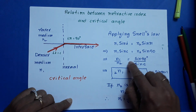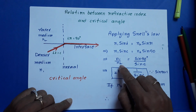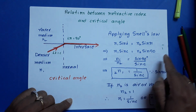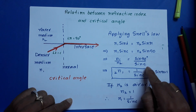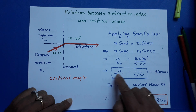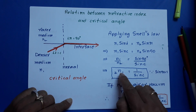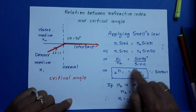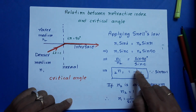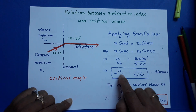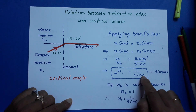Bring N2 to the LHS side. So N1 by N2 — send sin c to the RHS side — is equal to sin 90 by sin c. N1 by N2 means N12. How can you read it? Refractive index of the first medium relative to second medium. Sin 90 is nothing but 1, so it is 1 by sin c. This is the relation between refractive index and critical angle.